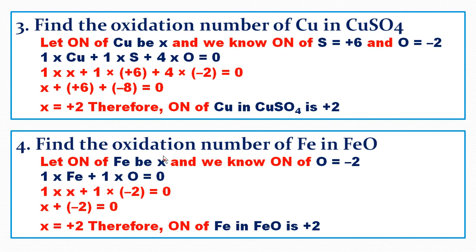Problem 4: Find the oxidation number of Fe in FeO. FeO has 1 Fe and 1 O. Let the oxidation number of Fe be X. We know the oxidation number of oxygen is −2. So: 1×(X) + 1×(−2) = 0, giving X − 2 = 0, therefore X = +2. The oxidation number of Fe in FeO is +2.